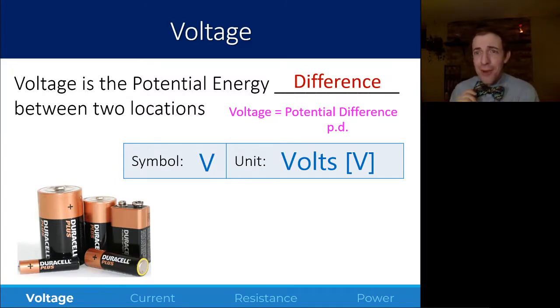You've probably seen voltage in a variety of different situations. Most commonly, you'll see voltage in a battery. A 9-volt battery obviously has 9 volts. All of these other cells have 1.5 volts.